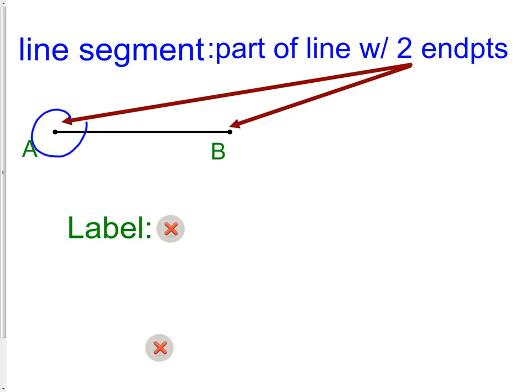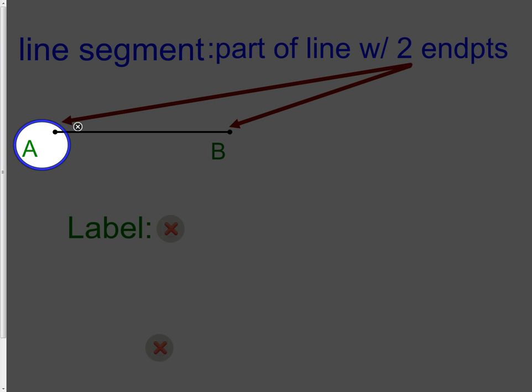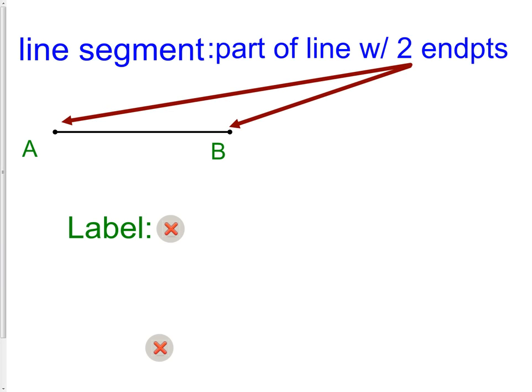In our picture here, we have A and we have B. That's where our line segment starts and ends. So, a line segment has a definite beginning and a definite end.